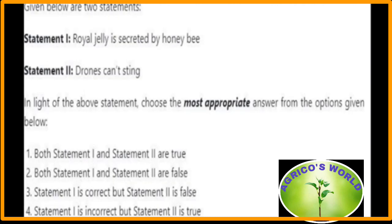Given below are two statements. Statement 1: royal jelly is secreted by honeybees — yes, this is correct. Statement 2: drones cannot sting — statement 2 is also correct. So from the given options we can choose the first option: both statement 1 and statement 2 are true.